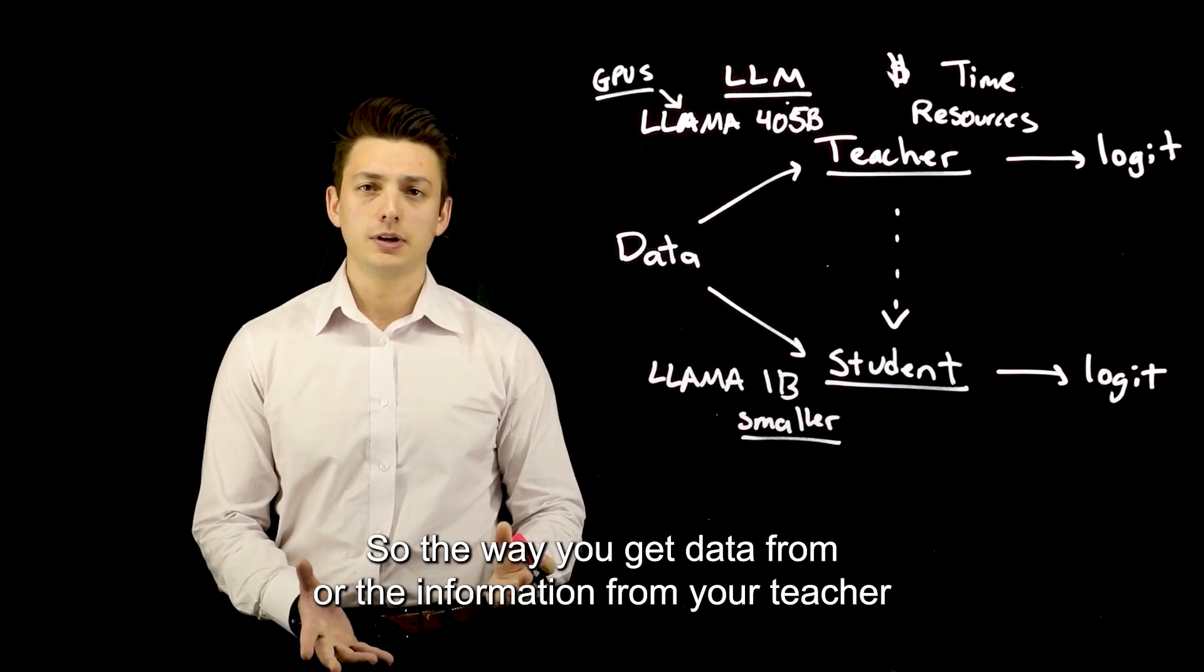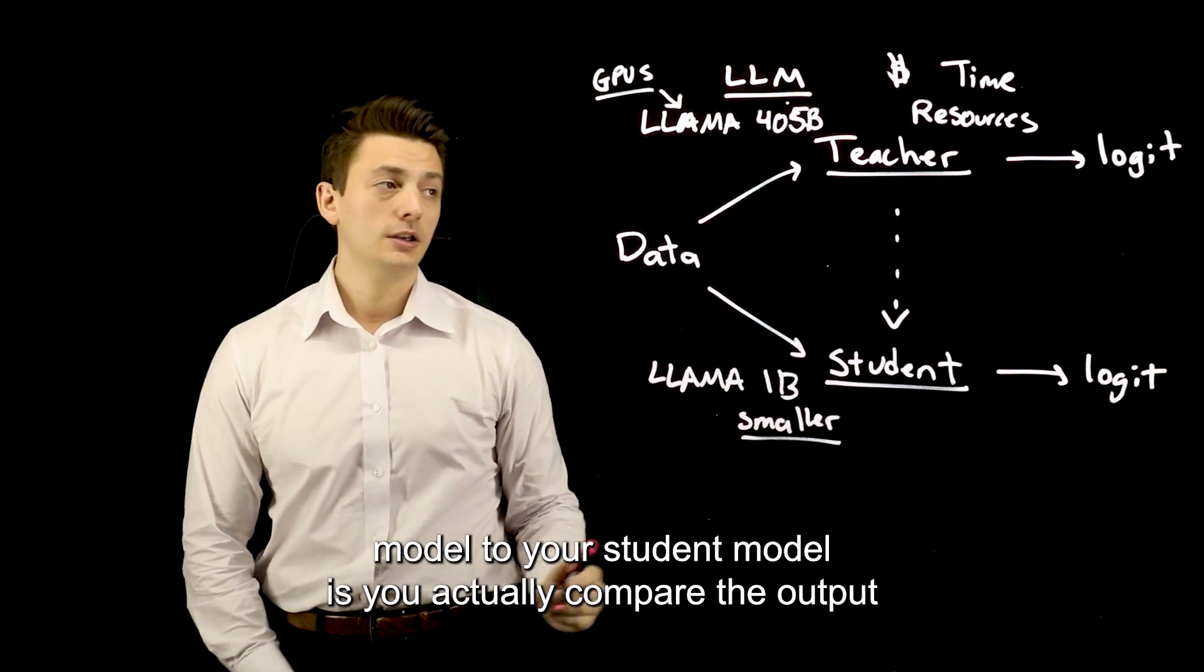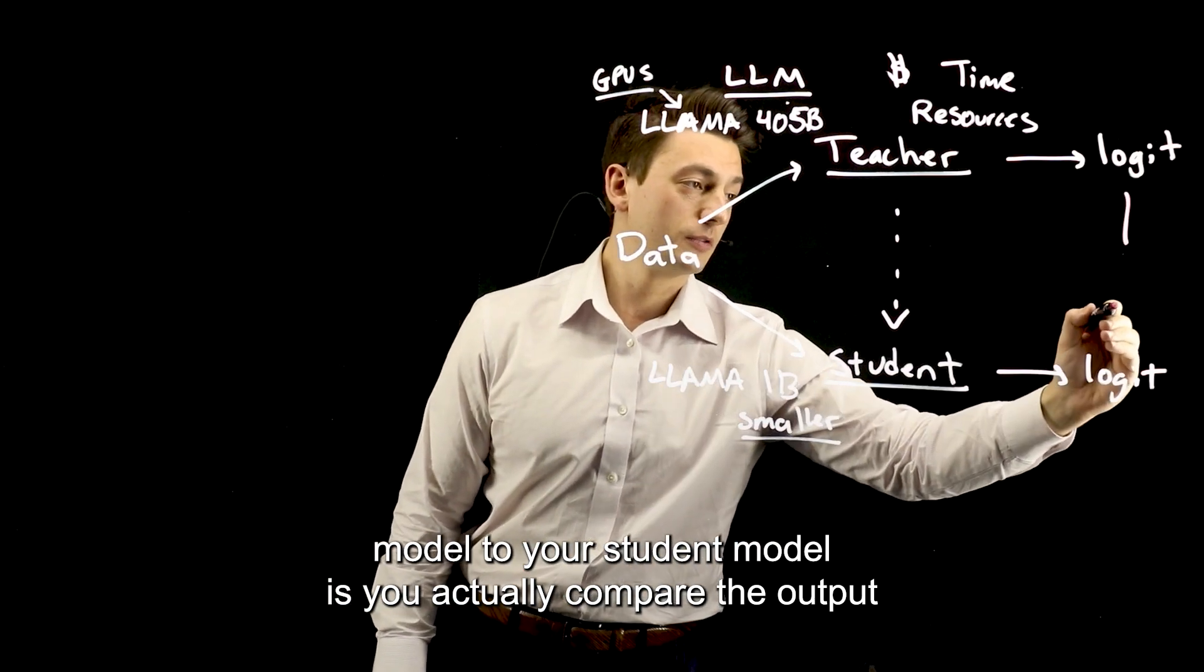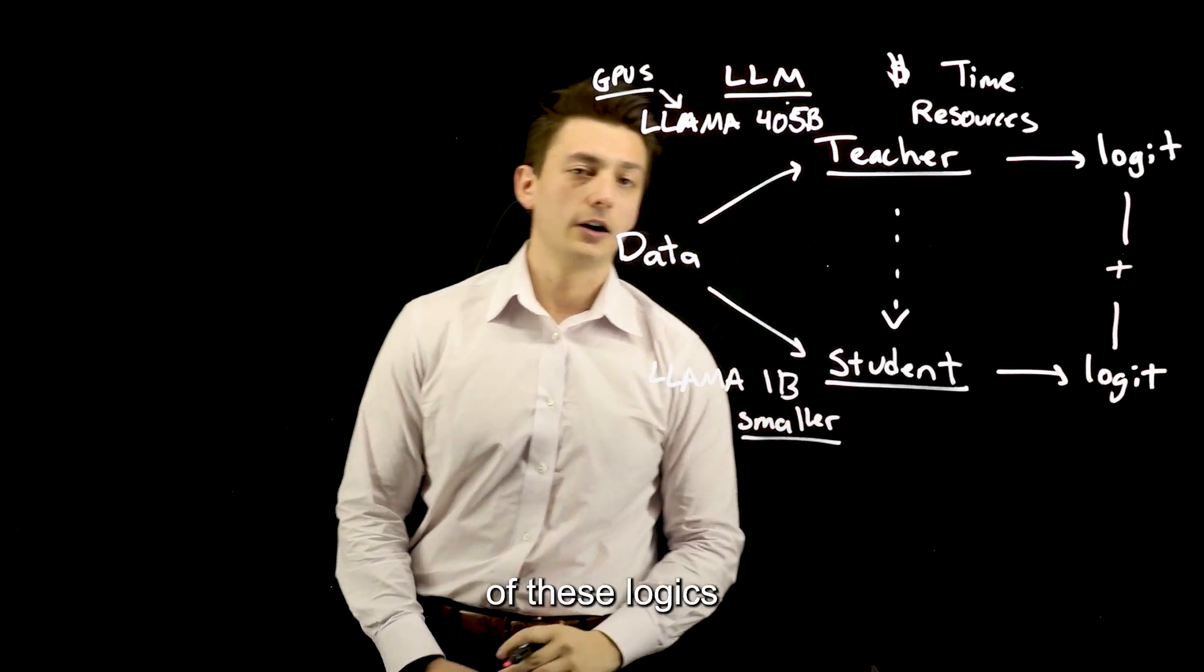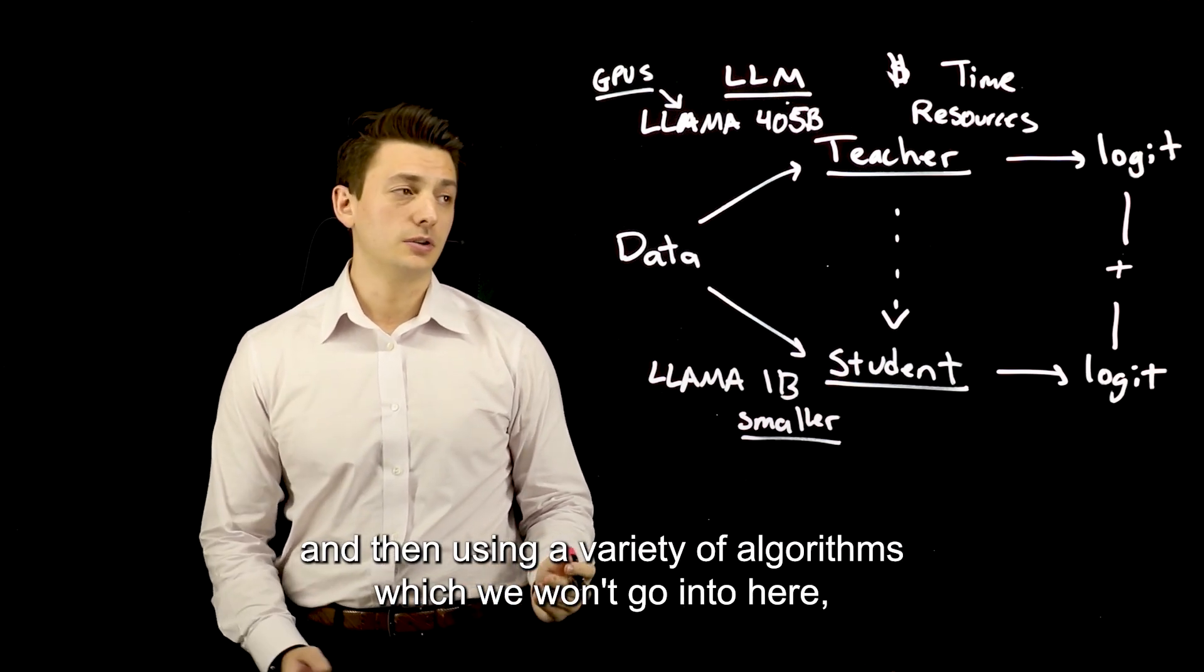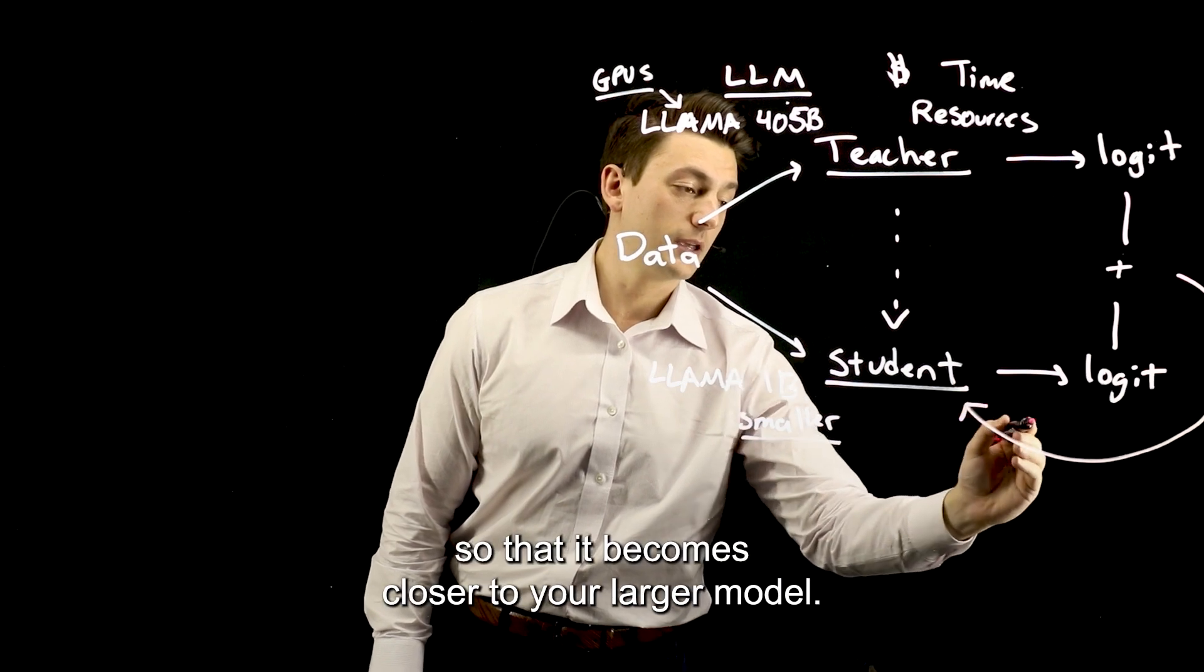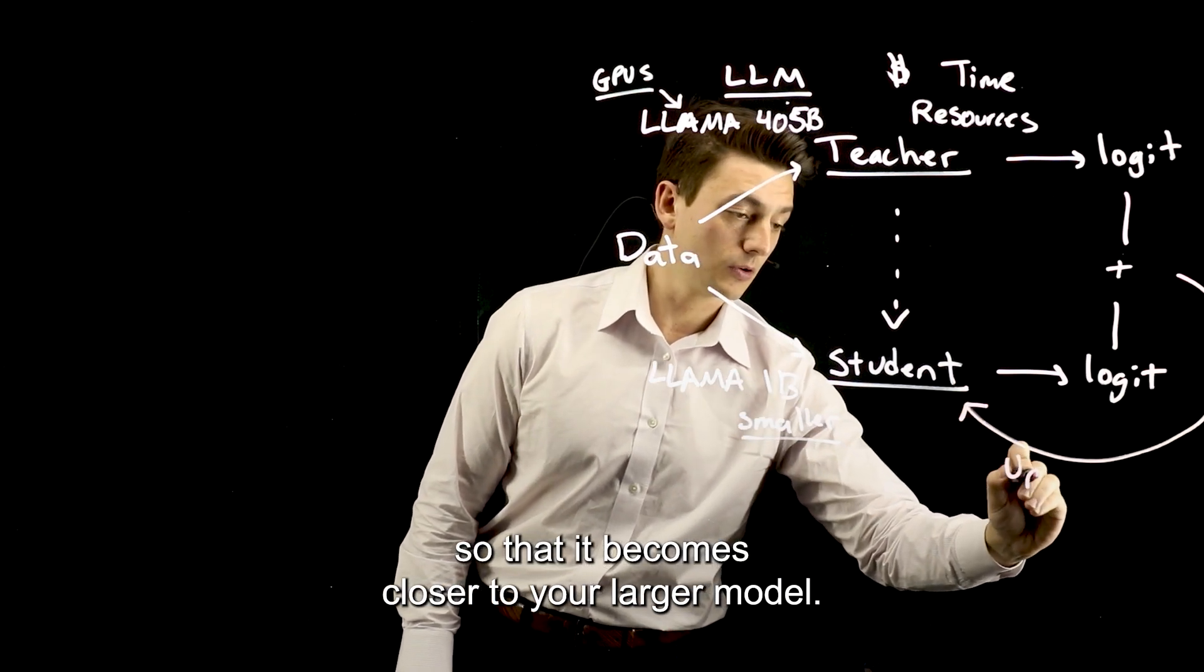So the way you get information from your teacher model to your student model is you actually compare the output of these logits. And then using a variety of algorithms, which we won't go into here, you can then update your smaller model so that it becomes closer to your larger model.